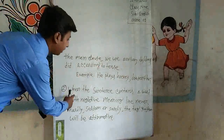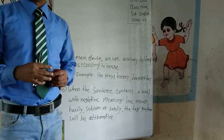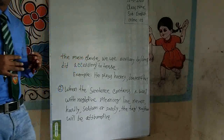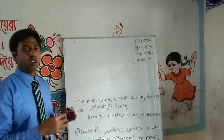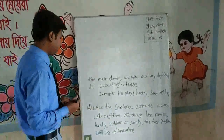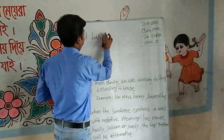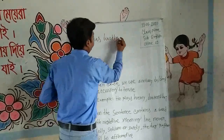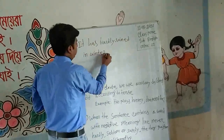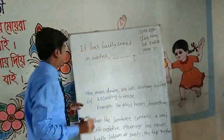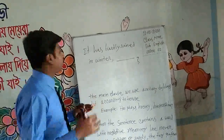Rule two: when a sentence contains a word with negative meaning — like 'never', 'hardly', 'scarcely', or 'rarely' — we use an affirmative tag. For example: 'It has hardly rained in winter.' We know that if a sentence contains 'hardly', we use an affirmative tag.